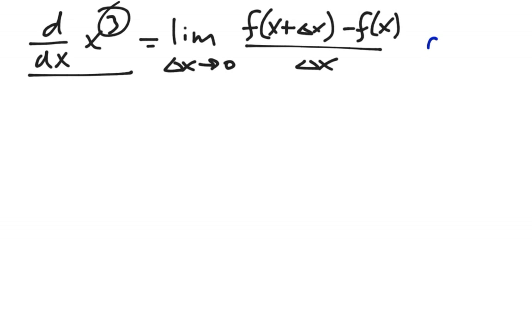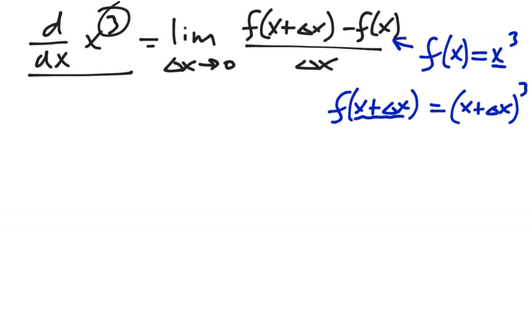First off, f of x is x cubed. Great. So that takes care of that one. And then f of x plus delta x, well, we basically just take the stuff and put it inside the x. So it's x plus delta x cubed. Like that.